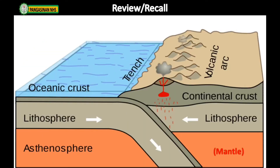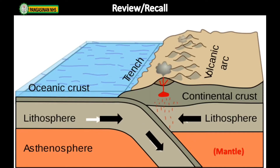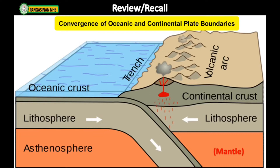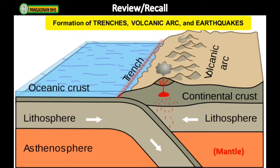In convergent plate boundary, the lithospheric plates are moving towards each other, where one leading edge of a plate will be subducted and turned into magma. Just like in the convergence of oceanic to continental crustal plates, that gives rise to the formation of trenches, volcanic arcs, and earthquakes.